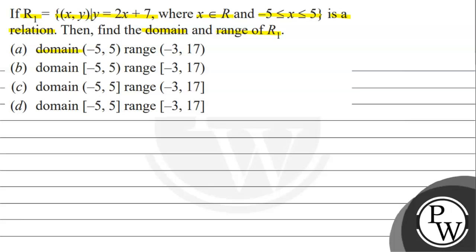First option: domain is [-5, 5) open bracket, range is [-3, 17) open bracket. Second option: domain is (-5, 5) open bracket, range is (-3, 17) open bracket. Third option: domain is [-5, 5] and range is [-3, 17]. Last option: domain is [-5, 5] and range is also [-3, 17].